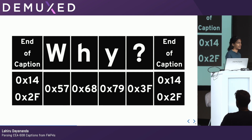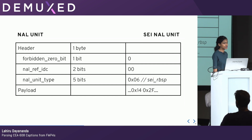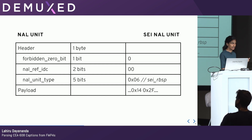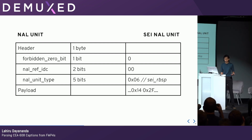Now we have a caption, but we still don't know how to tell the decoder that it's a 608 caption. We do that by transferring it in a SEI NAL. A NAL is a network abstraction layer unit, and the thing we care about here is the NAL unit type of six, which specifies it's a SEI — Supplemental Enhancement Information — NAL unit. That's just the type of NAL unit that carries 608 data. So great, now we have a 608 caption, technically.